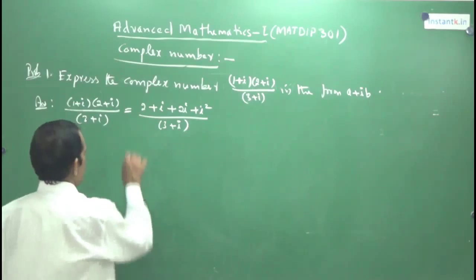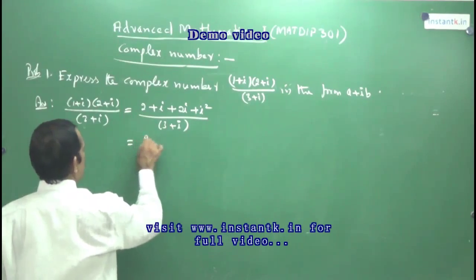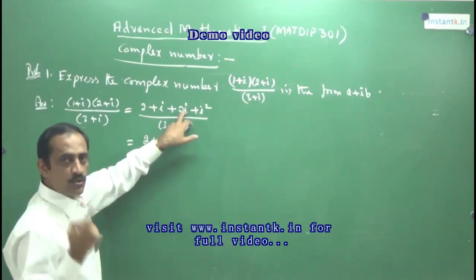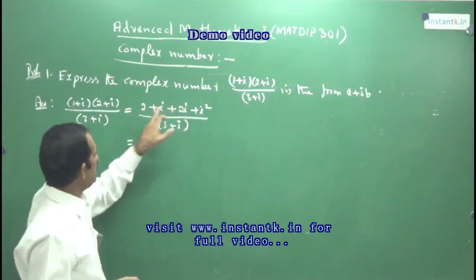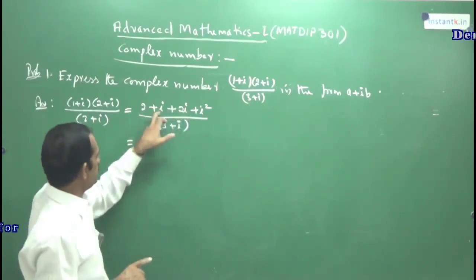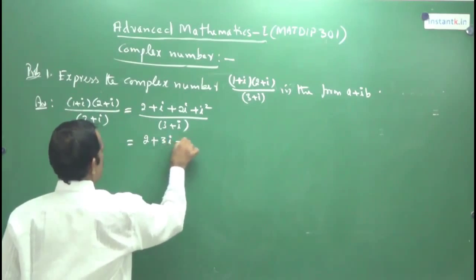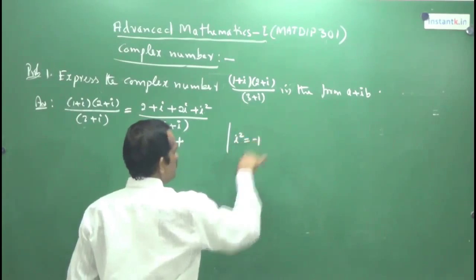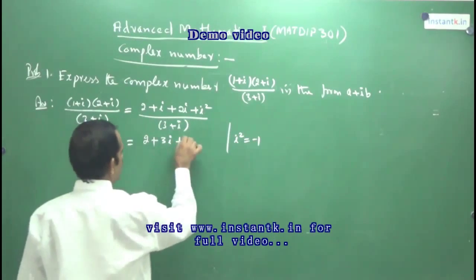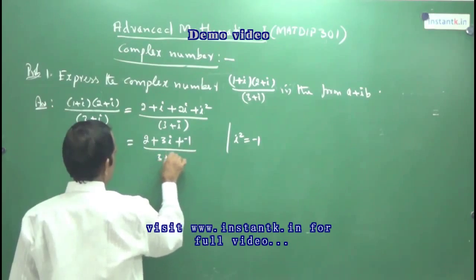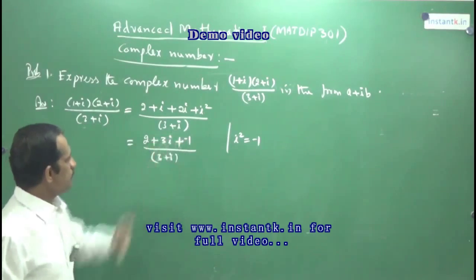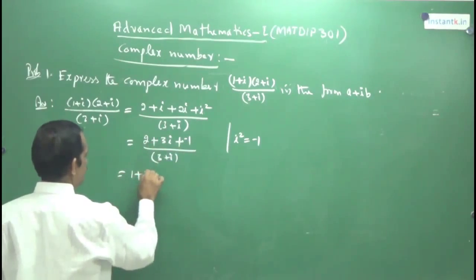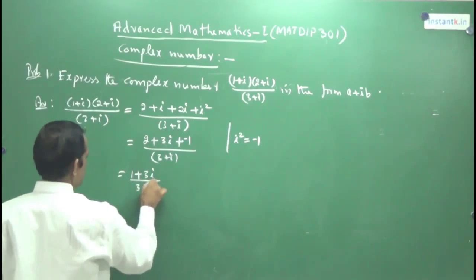You have to take care while writing the steps. After expanding, you get: 2 + i + 2i + i². Simplifying: i + 2i gives 3i, and i² is always minus 1. So you get 2 − 1 + 3i, which is (1 + 3i) divided by (3 + i).